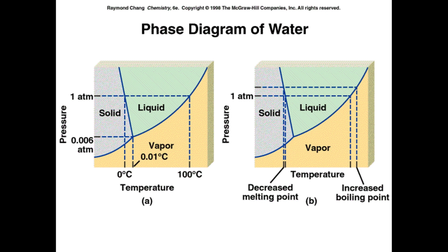To read the temperature at which you have the boundary between solid and liquid — the melting point — at one atmosphere, you read over until you hit that phase boundary line between the solid and liquid phases. Take where you hit that line, come down, and read on the graph to get the temperature at which it melts — that's the melting point at one atmosphere.